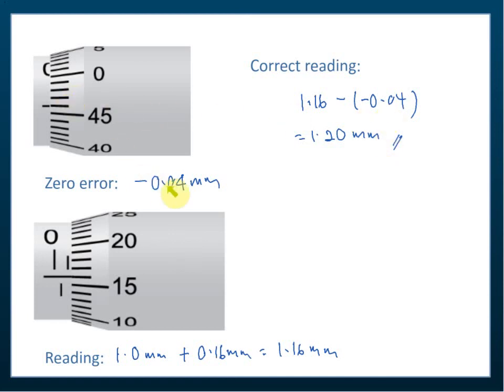So the zero error is a negative zero error, so we must minus negative. Minus negative becomes plus, so 1.16 minus negative 0.04 will become 1.20. So the correct reading is 1.20 mm.